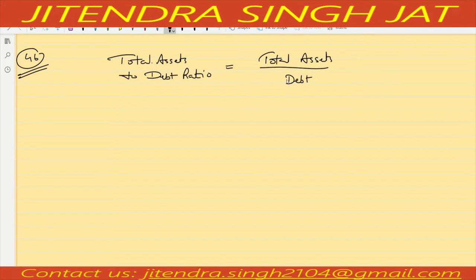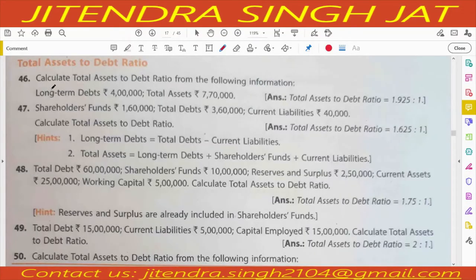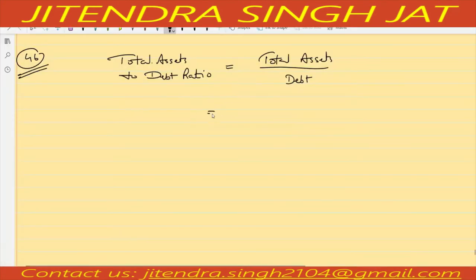This solvency ratio reveals the capacity of a business to take loans. Question number 46: calculate total assets to debt ratio from the following information — long term debts are given and total assets are given directly. Total assets are given as 7,70,000 and long term debts are given as 4 lakh. So 7,70,000 divided by 4 lakh equals 1.925, written as 1.925 is to 1.